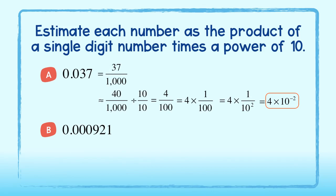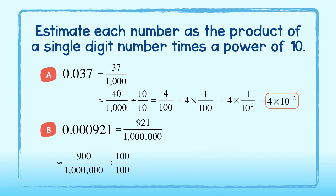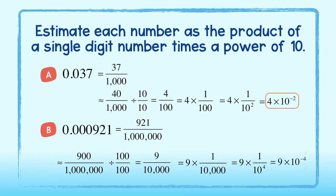For part b, we first write nine hundred and twenty-one one-millionths as a fraction. This rounds down to nine hundred one-millionths. Simplifying, we get nine ten-thousandths. Writing this as a multiplication problem, we get nine times one ten-thousandth, or nine times one over ten to the fourth power. Using our negative exponent rule, we write this as nine times ten to the negative fourth power.